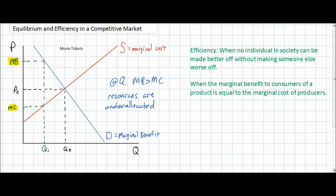If producers were to increase the quantity towards QE, the marginal benefit would begin to diminish as more consumers who want to go to movies are able to do so. Meanwhile, the marginal cost to movie producers would increase as resources needed become more scarce. As the quantity increases towards QE, we move towards a more efficient allocation of resources where marginal benefit equals marginal cost and resources are neither under- nor over-allocated.